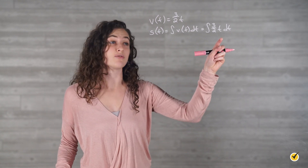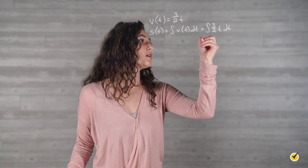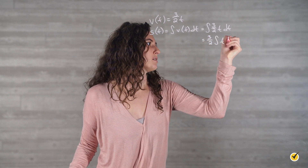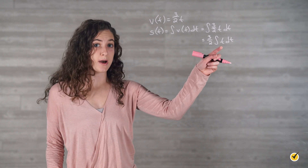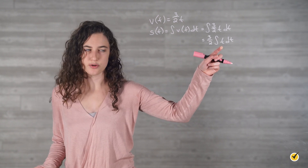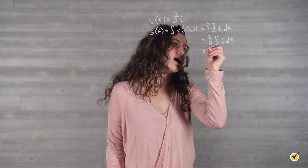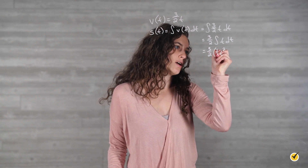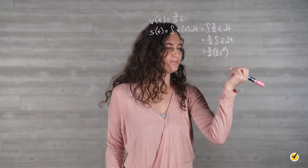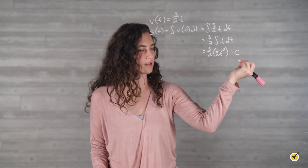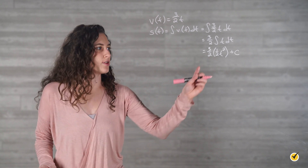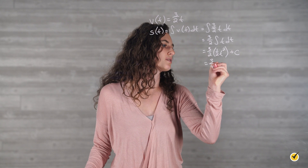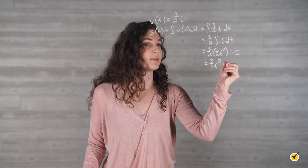Here we can move the 3/2 out in front and handle t separately. So this is equal to 3/2 times the integral of t dt. We raise the power of t by 1 and divide it by the new power, so we'll have 3/2 times (1/2)t squared. And then we have to add our constant, so we have 3/2 times 1/2 t squared plus c, which simplifies to (3/4)t squared plus c.